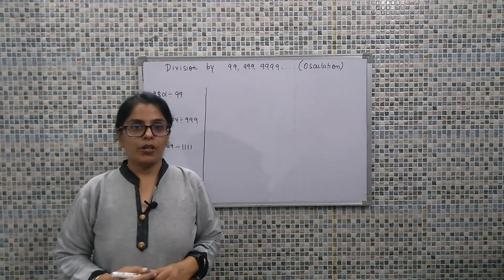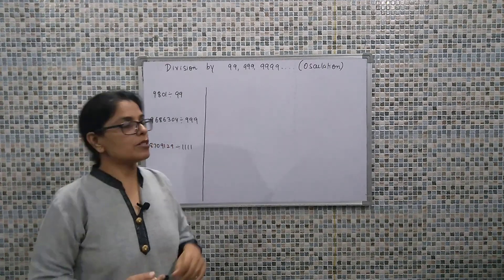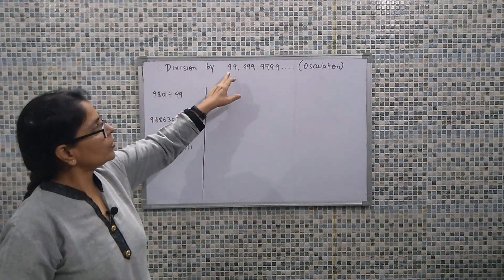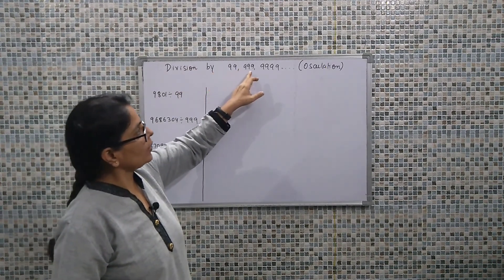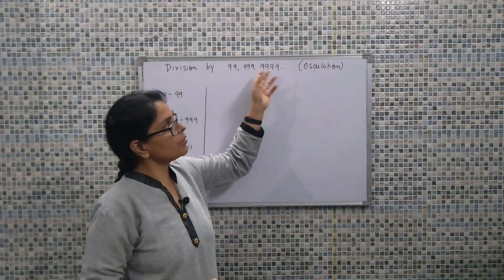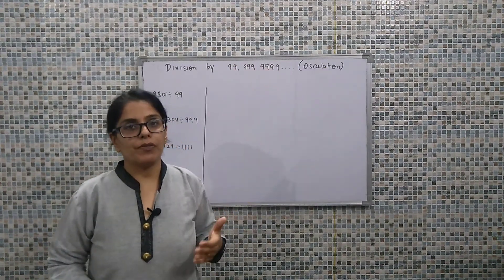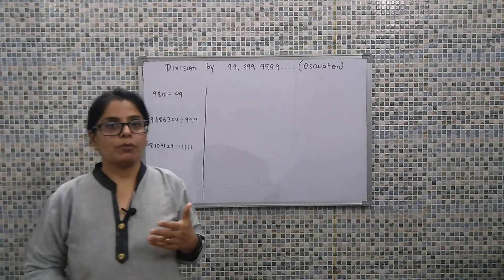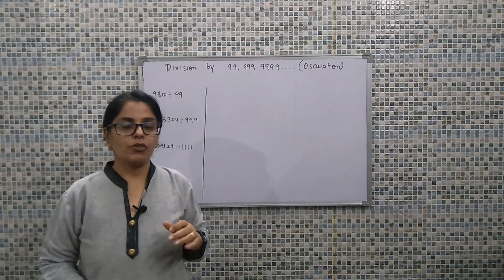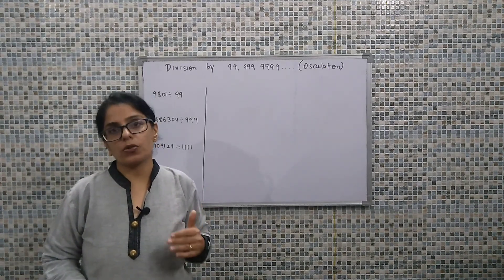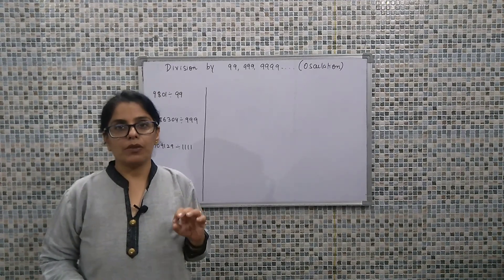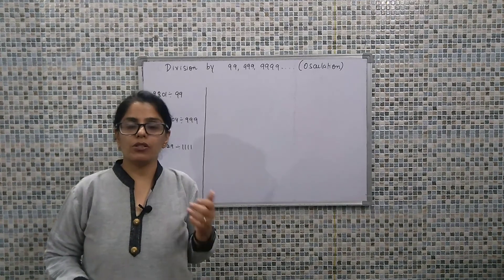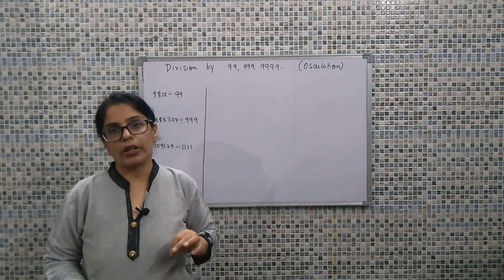Hello viewers. In today's session we would be discussing how we can proceed for division if we have the divisor being 99, 999, 999 — meaning if there is a repeated pattern of 9s, how we can check divisibility. When we talk about divisibility here, we would be discussing in context to osculation, to check whether the given number is divisible by that particular value or not.